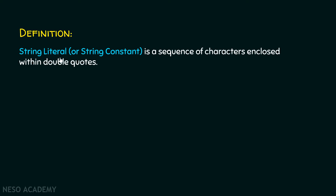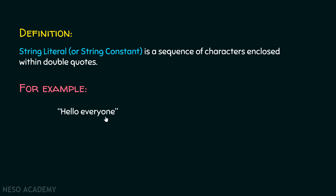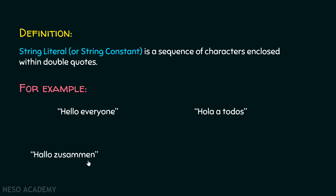Here is a definition of a string literal. A string literal or string constant is a sequence of characters enclosed within double quotes. For example, 'hello everyone' is a string literal because it is enclosed within double quotes and is a sequence of characters. In Spanish, I can say hello everyone as 'hola et dos'. In German, it is 'hello Zussman', and in Italian, it is 'chao tutti'. These are all string literals because they are sequences of characters enclosed within double quotes.